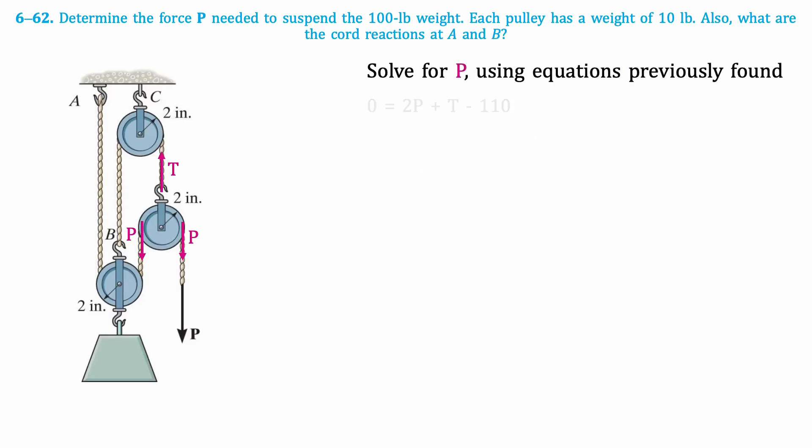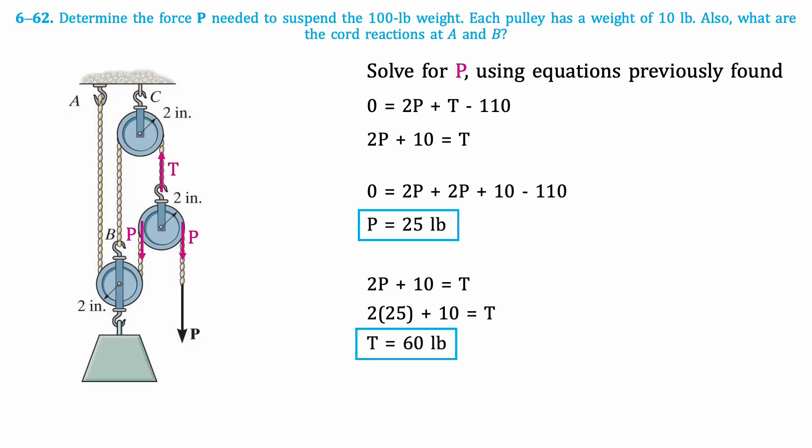Using the two equations we previously found, we can solve for P, substituting the second equation into the first. This is the resulting equation. Isolating for P, we get that it equals 25 pounds. Substituting this value of P back into the second equation gives that T equals 60 pounds.